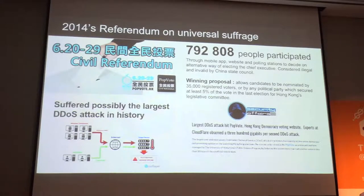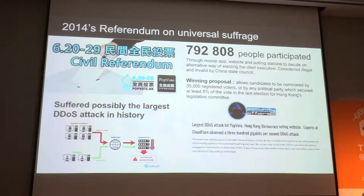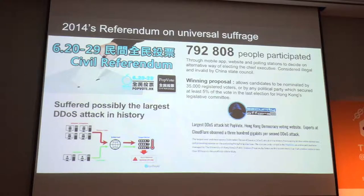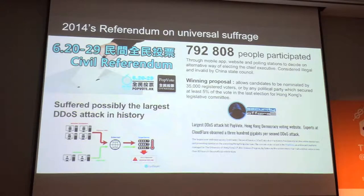Since this was implemented in 1997, activists have been battling this system to bring universal suffrage to the Hong Kong chief executive election. One of the big initiatives that actually started around the Occupy Central movement was a referendum about universal suffrage that was led by PopeVote.